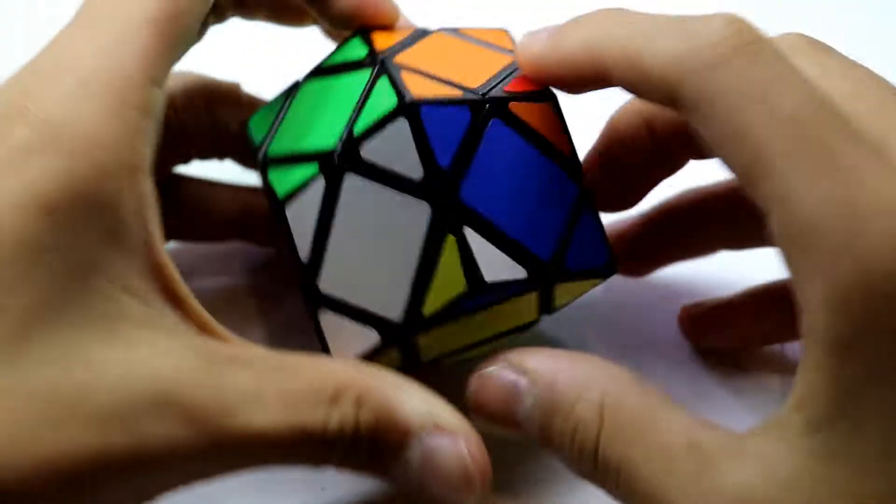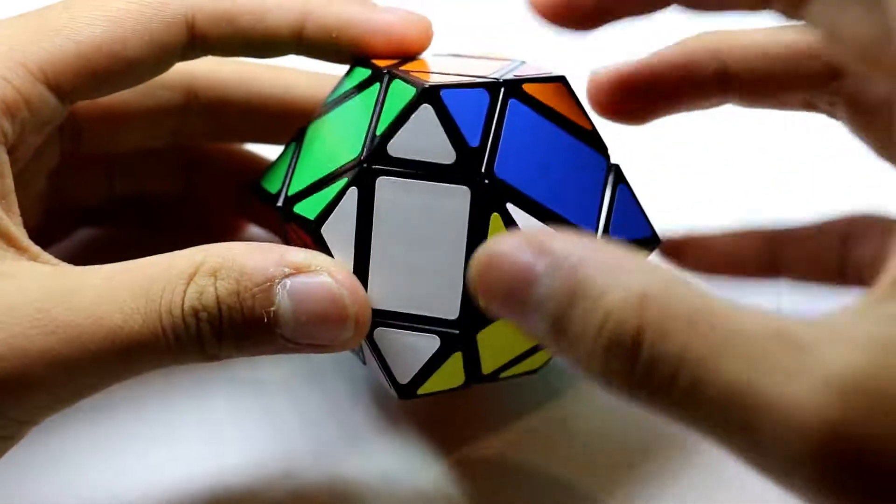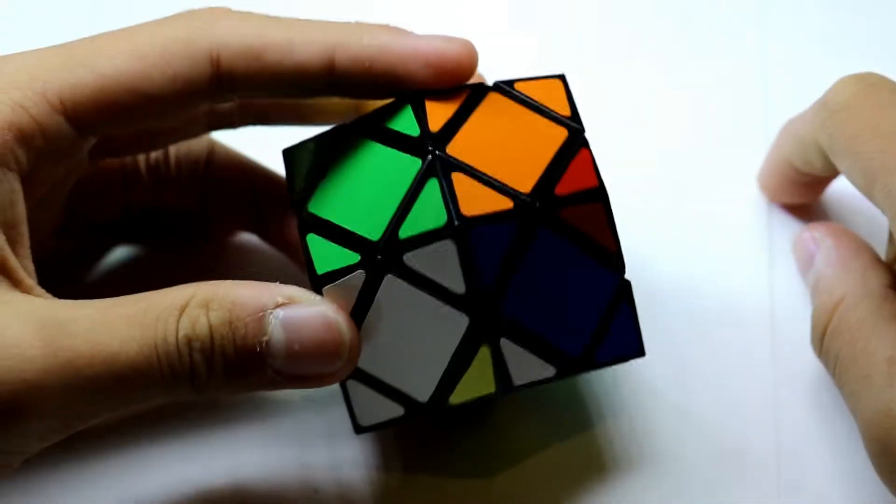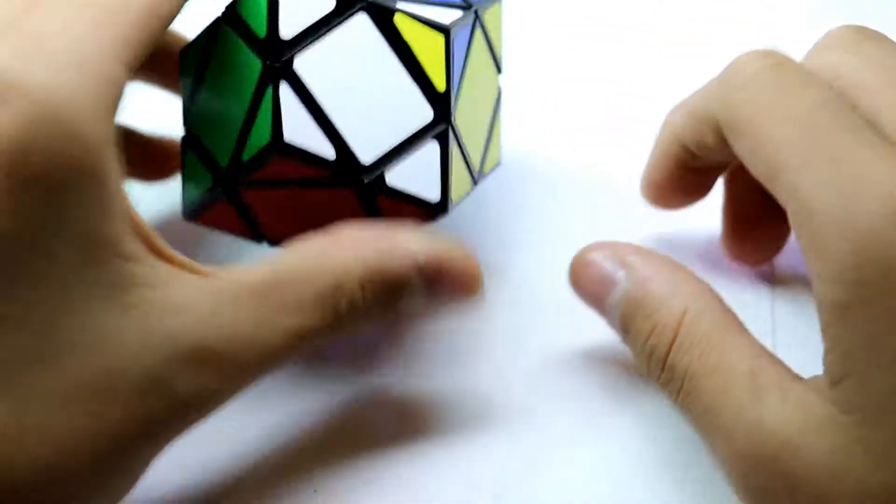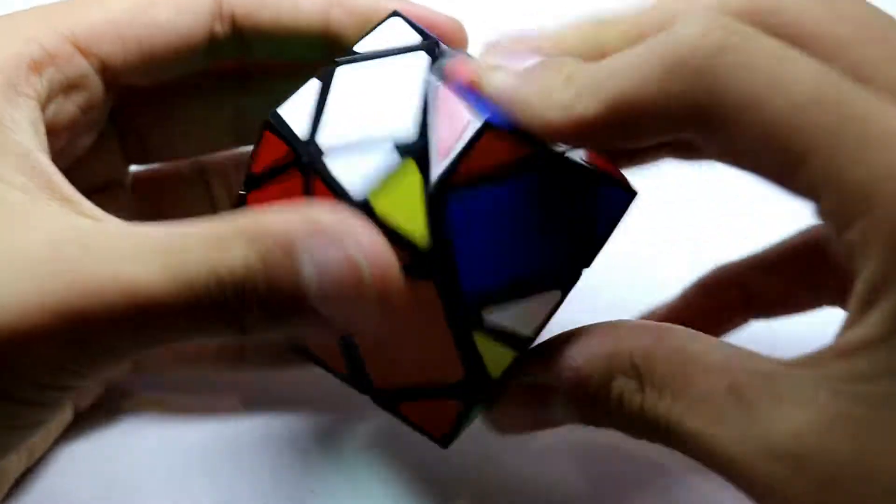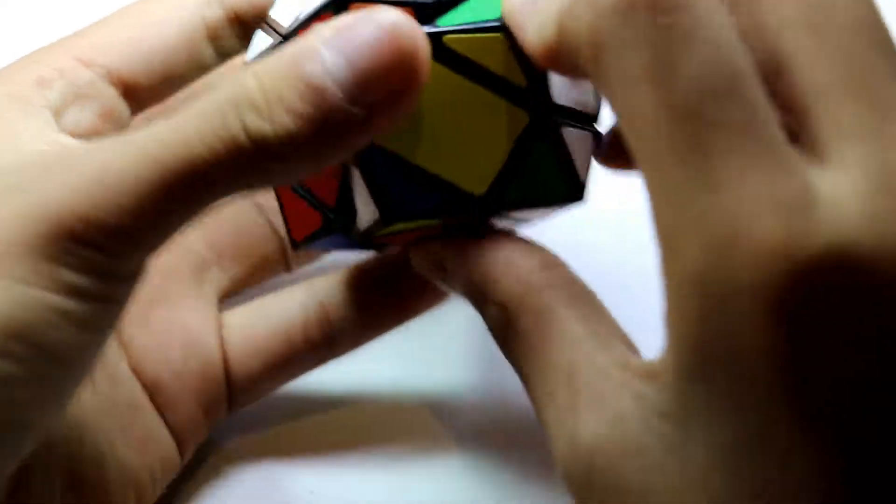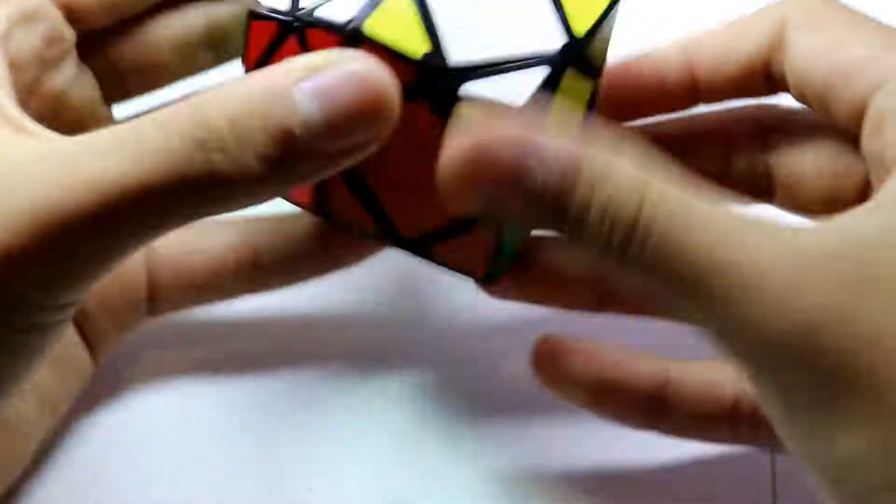And now we just got to do R, D prime, R, D move to orient this the correct way. So make sure that the one that is not solved is on your right bottom. And do this here with R prime, D prime, R, D, R prime, D prime, R, D.